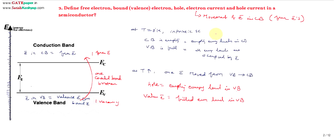Hole current: can we say it is the movement of holes in the valence band? That concept is wrong, because a hole means an empty energy level, and an empty energy level is fixed — it cannot move. Hole is not a physical particle; it is an empty energy level, not a charged particle strictly speaking. It is treated as positive because whenever a valence electron moves to the conduction band, the vacancy created in the valence band is treated as positively charged.